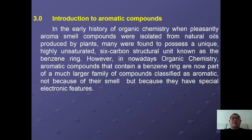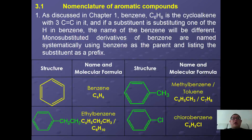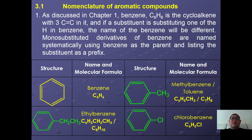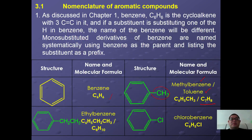Let's look at the nomenclature of aromatic compounds. As discussed in chapter one, benzene (C6H6) is a cycloalkane with three C=C double bonds. If a substituent replaces one of the hydrogens in benzene, the name changes accordingly. Mono-substituted benzene derivatives are named systematically using benzene as the parent chain and listing the substituent as a prefix. For example, replacing one H with CH3 gives methylbenzene, more commonly known as toluene, with the formula C6H5CH3 or C7H8.